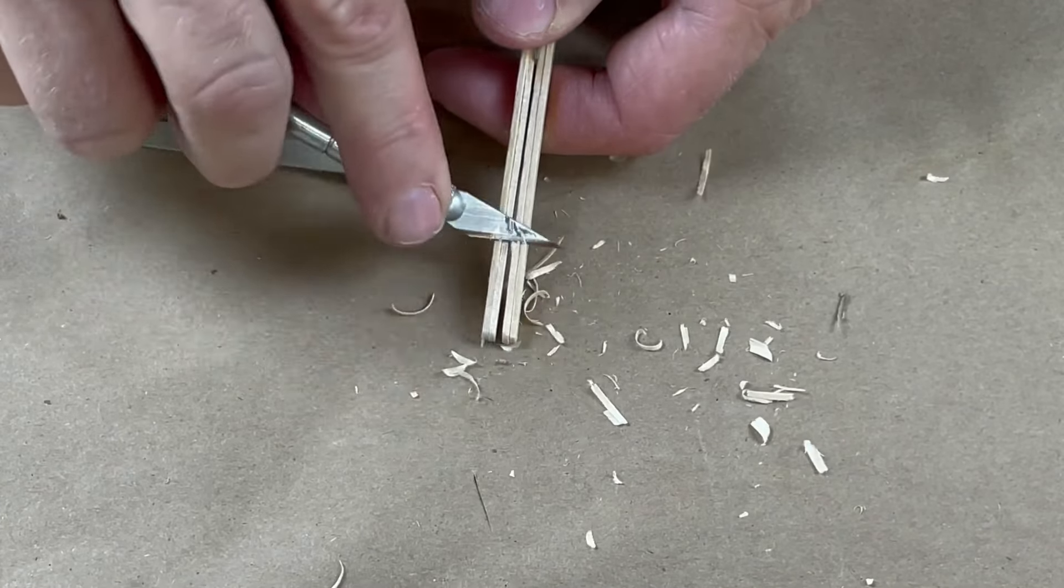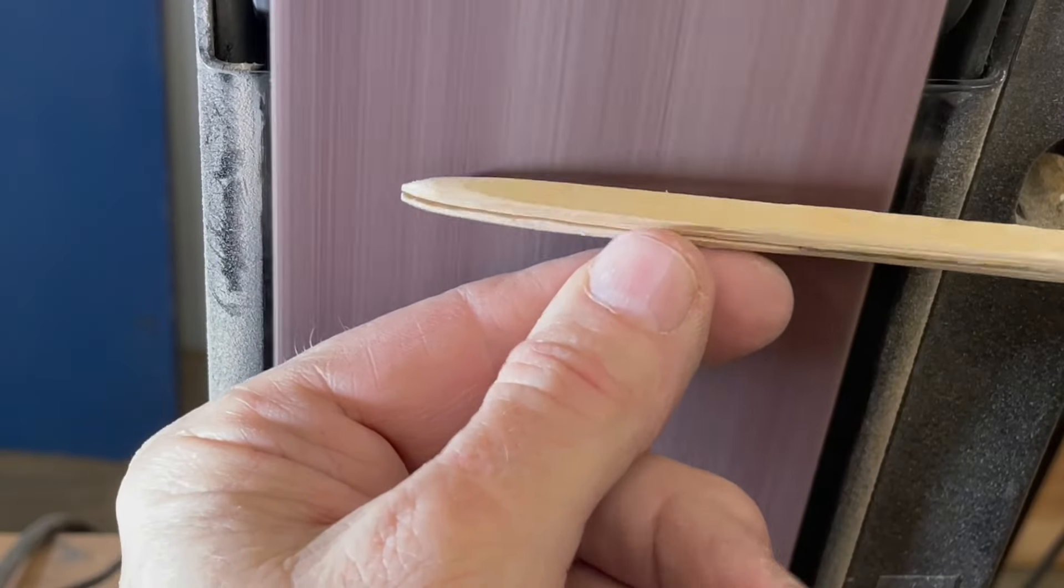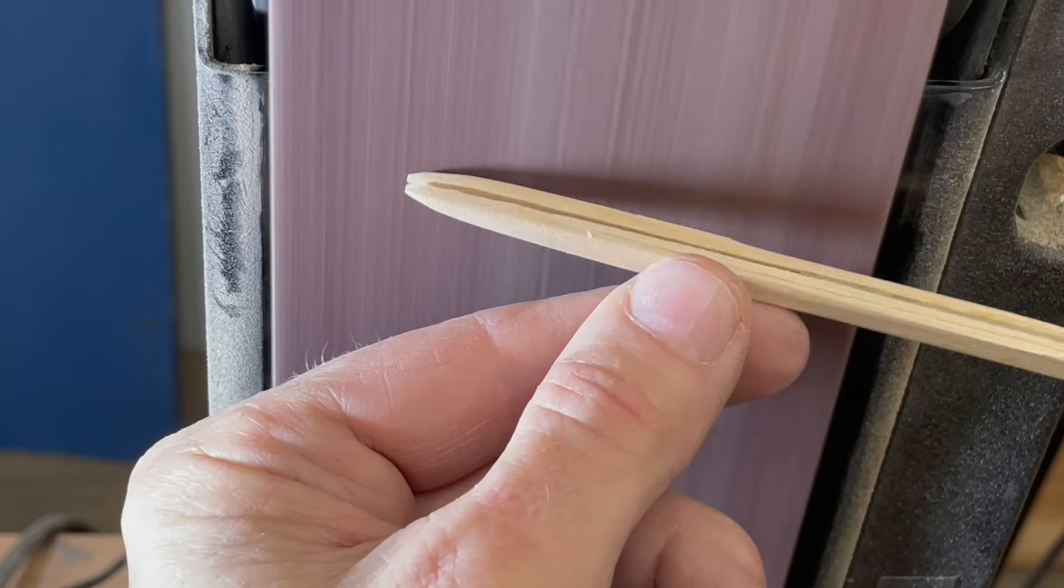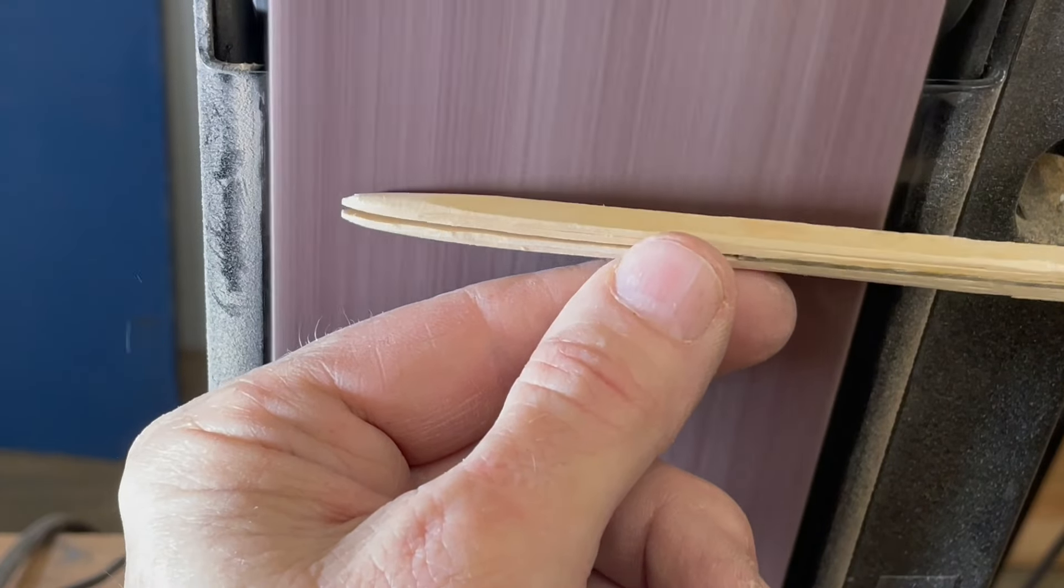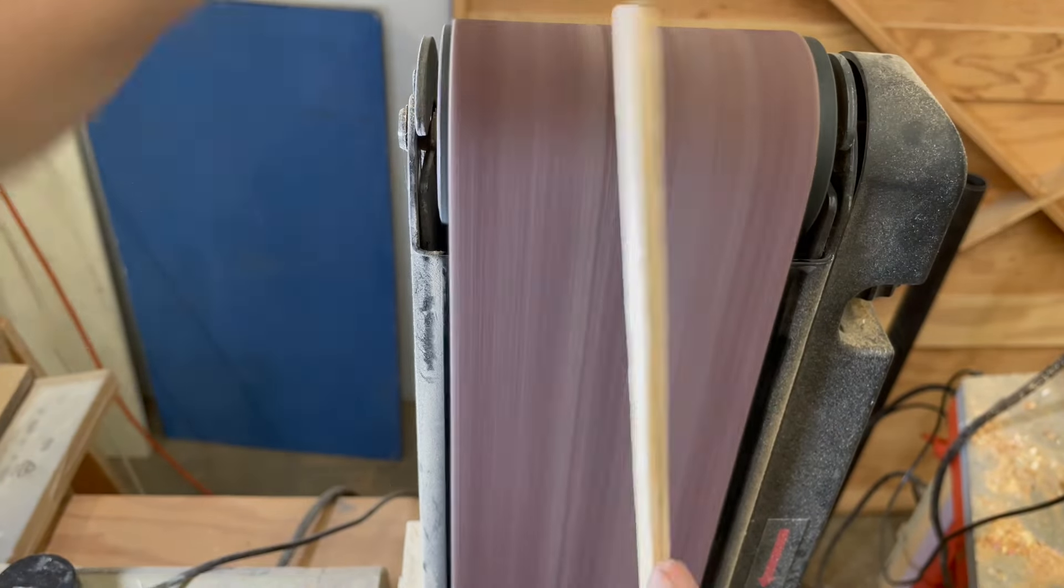Of course, if you have a belt sander you should use it. It makes it quick and easy to shape the tip and also round over the sides of the tool to make it nice and comfortable to hold.